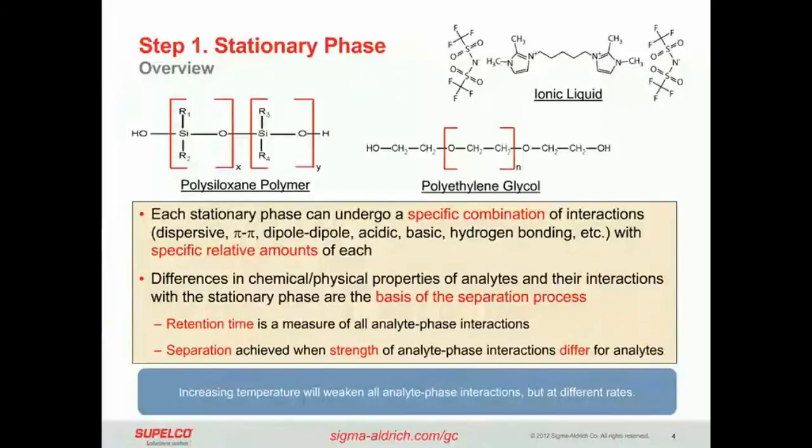But equally important, they each have relative or specific relative amounts of each of these interactions. For example, a polysiloxane polymer that has 5% phenyl and 95% methyl can undergo both dispersive, which is what the methyl gives you, and pi-pi, which is coming from that 5% phenyl R groups.